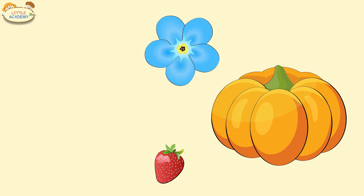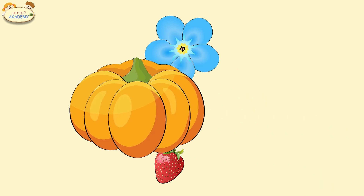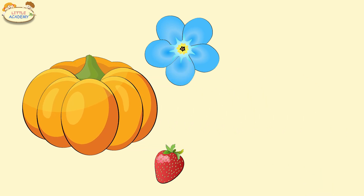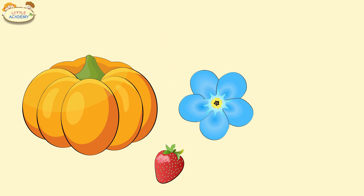Let's take a look. Here are three objects: a pumpkin, a flower, and a strawberry. Which is the large one? Great, it's the pumpkin. Which one is medium? Yes, the flower is medium. And which one is small? That's right, the strawberry is small.